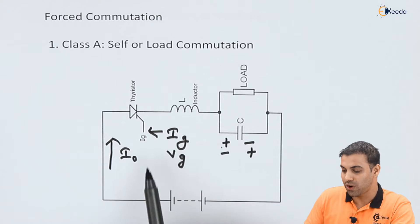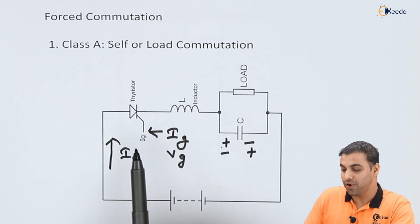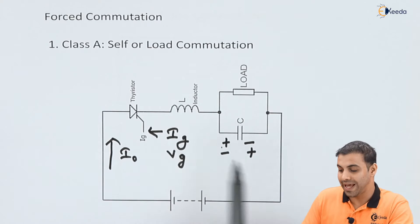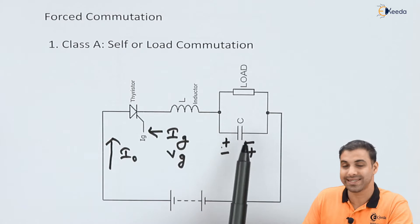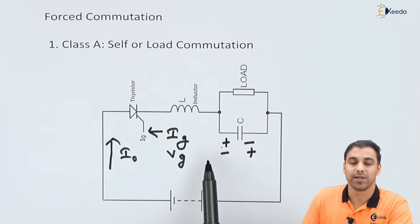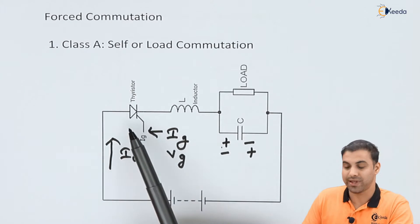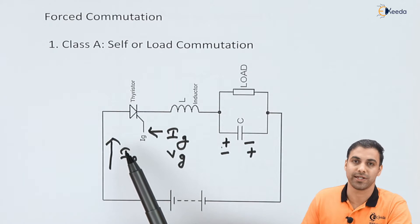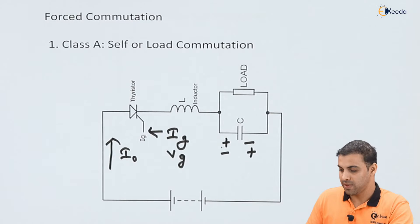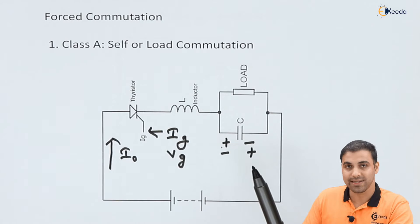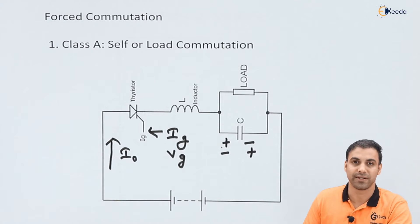This is called self or load commutation. We are using L and C reactance just to stop the conducting principle of a thyristor which is already conducting in a circuit. This happens because of the capacitor charging and discharging and the inductor action.